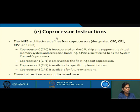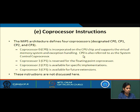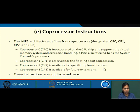The next set is coprocessor instructions. The MIPS architecture defines four coprocessors designated as coprocessor 0, 1, 2, and 3. Coprocessor 0 is incorporated within the CPU chip and supports the virtual memory system and exception handling — it is also referred to as the system control coprocessor. Coprocessor 1 is reserved for the floating point coprocessor. Coprocessor 2 is available for specific implementations and coprocessor 3 can be used for future extensions.